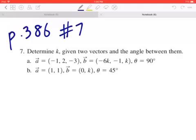Part B: Vector A is (1, 1), Vector B is (0, k), and the angle between them is 45 degrees.